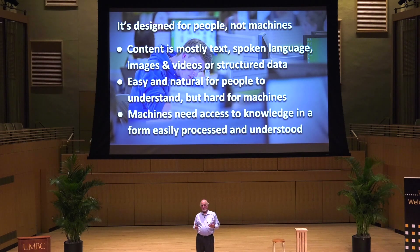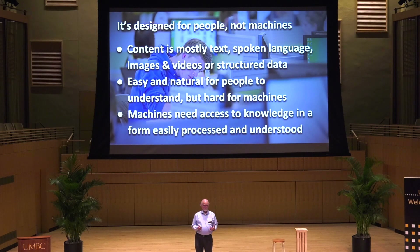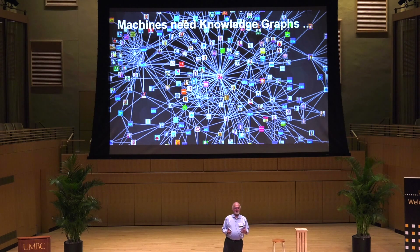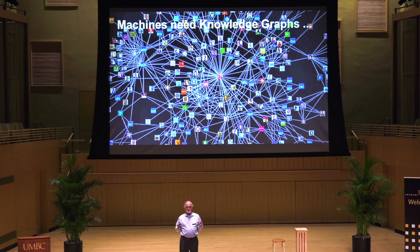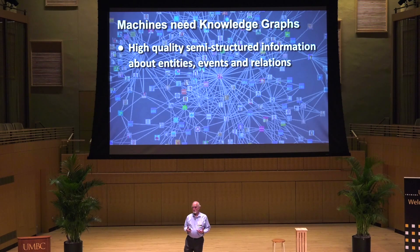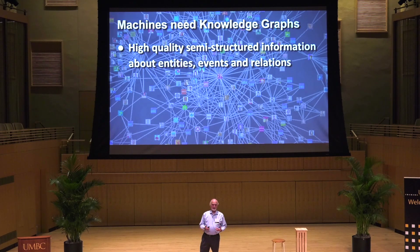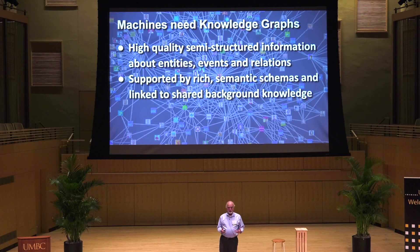What we'd like to do is give machines access to knowledge in a form that's natural and easy for them to process and understand. The machines need what we call knowledge graphs — knowledge graph is the new buzzword; we used to talk about knowledge bases. These are sources of information that are high quality and semi-structured. They use graphs as the data structure rather than tables like SQL, and contain information about entities, events, relations, sentiment, and whatever you need to represent.